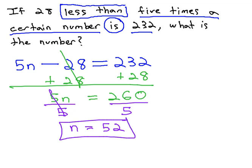This means 28 less than 5 times 52 is 232. We have found our number.